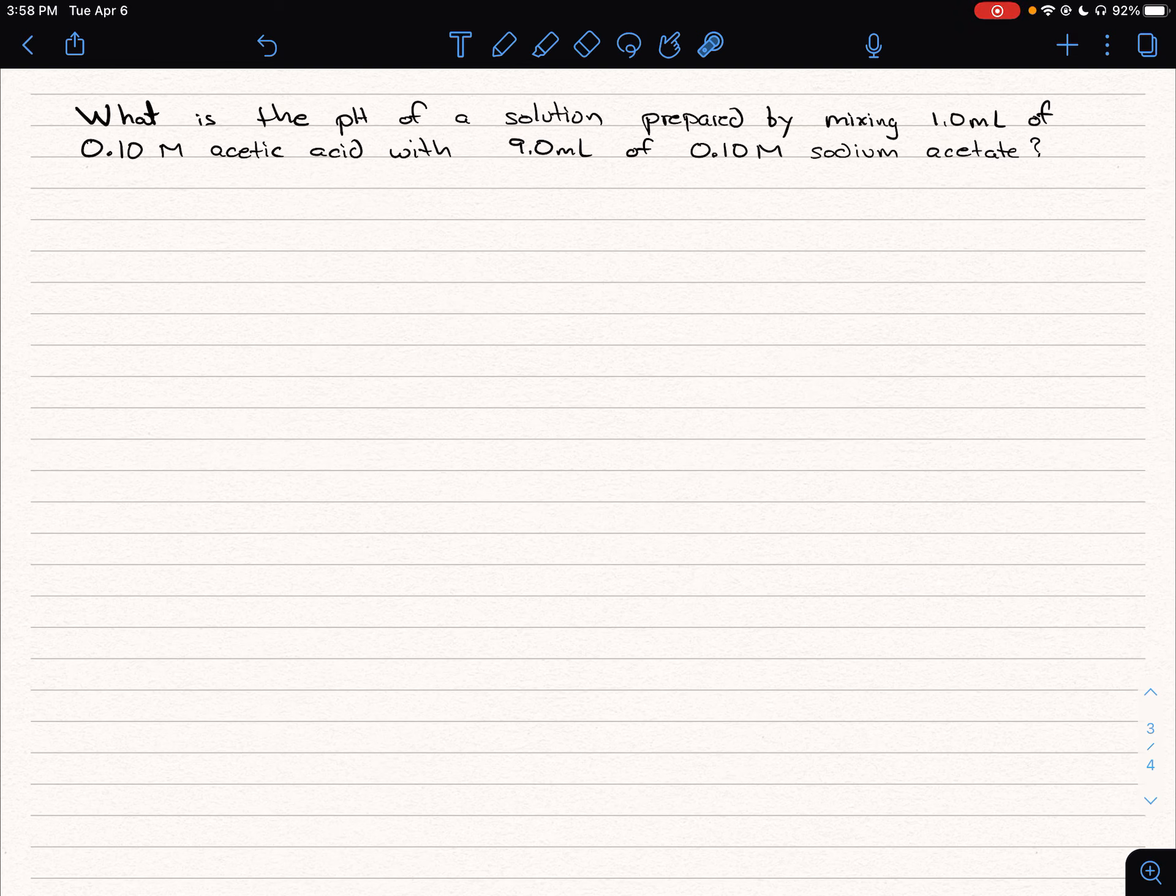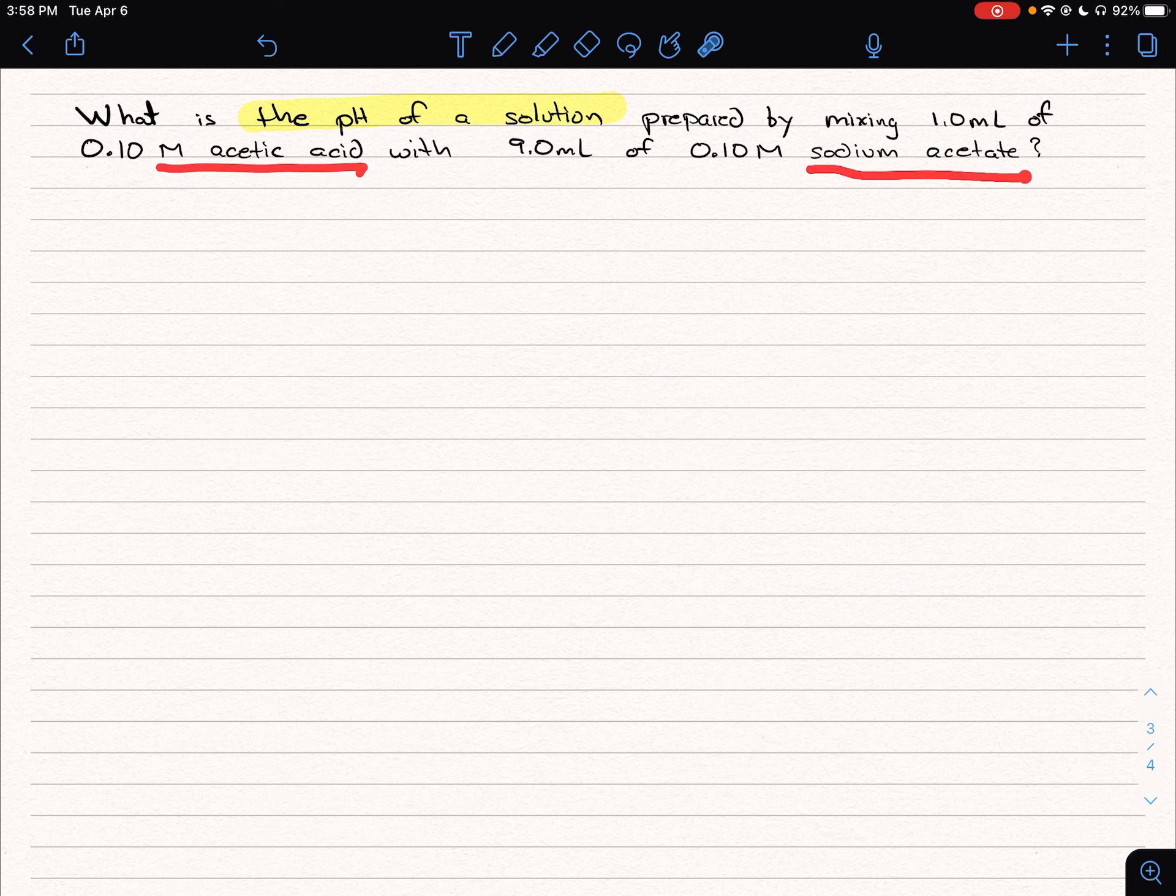So in this problem, we're going to find the pH of a solution prepared by mixing acetic acid with sodium acetate. We can see we're mixing 1 mL of 0.1 molar acetic acid with 9 mL of 0.1 molar sodium acetate.